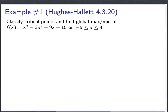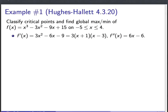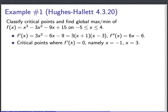Here's an abstract example from the textbook. We need to classify the critical points and find the global max and min of a function on the interval x between minus 5 and 4. We calculate the derivative: f prime equals 3x squared minus 6x minus 9, using rules for power functions. This factors conveniently, which will be helpful. The second derivative is 6x minus 6. The critical points — where the first derivative is zero — are at x equals negative 1 and x equals 3.